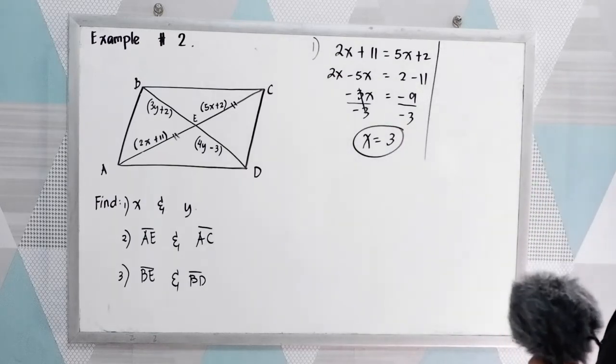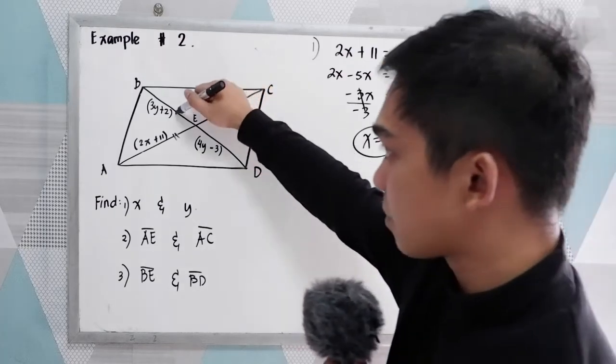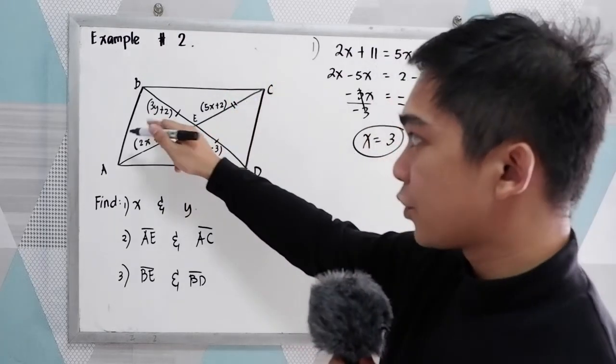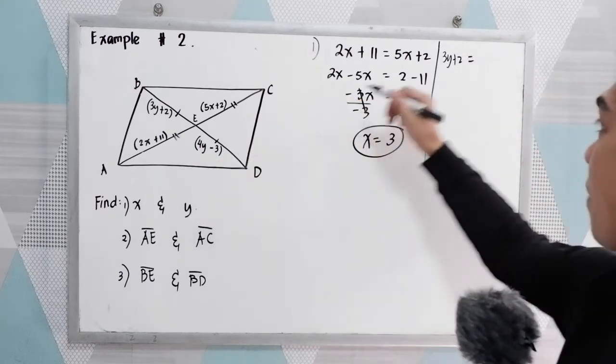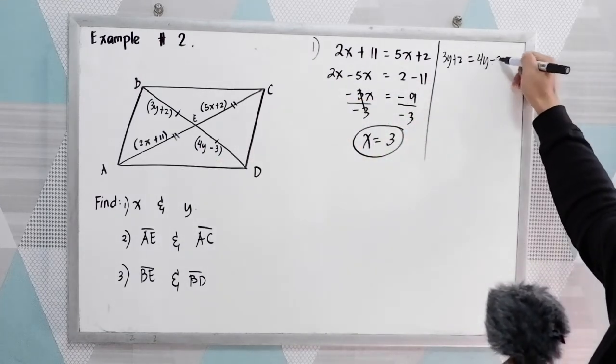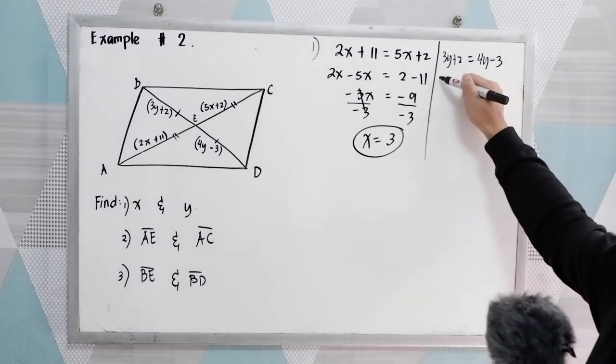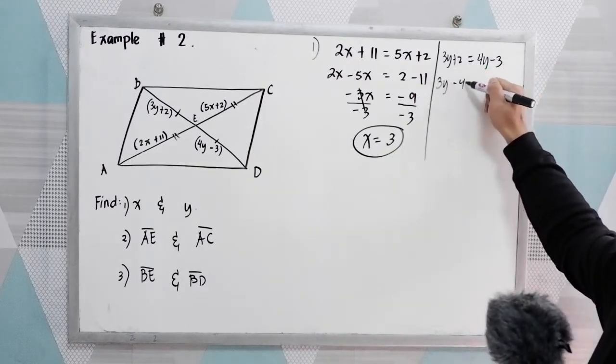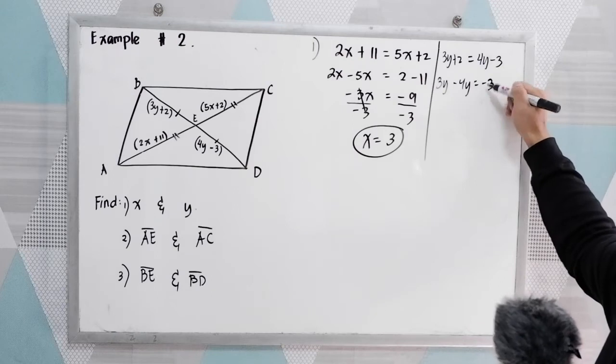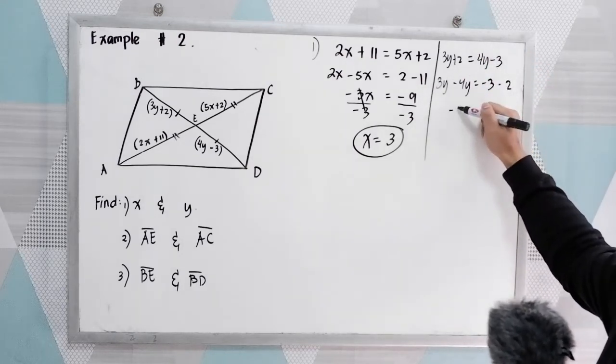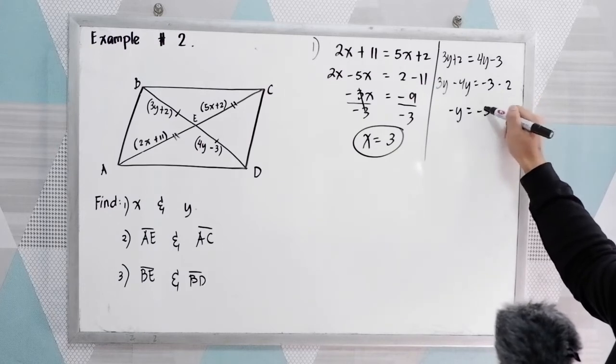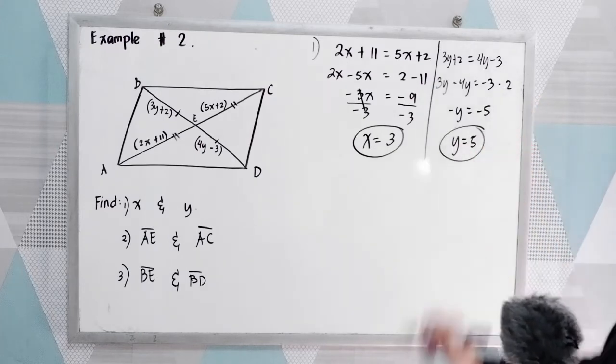Next, to find y, the diagonals bisect each other. So we have 3y plus 2 is equal to 4y minus 3. So for y, 3y minus 4y is equal to negative 3 minus 2. 3y minus 4y, that is negative y, is equal to negative 5. So y is equal to positive 5.